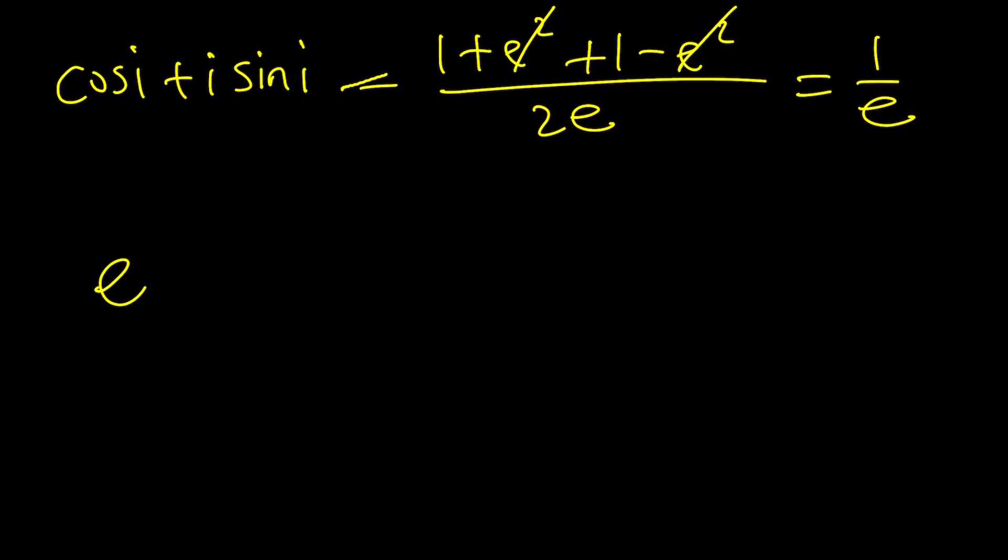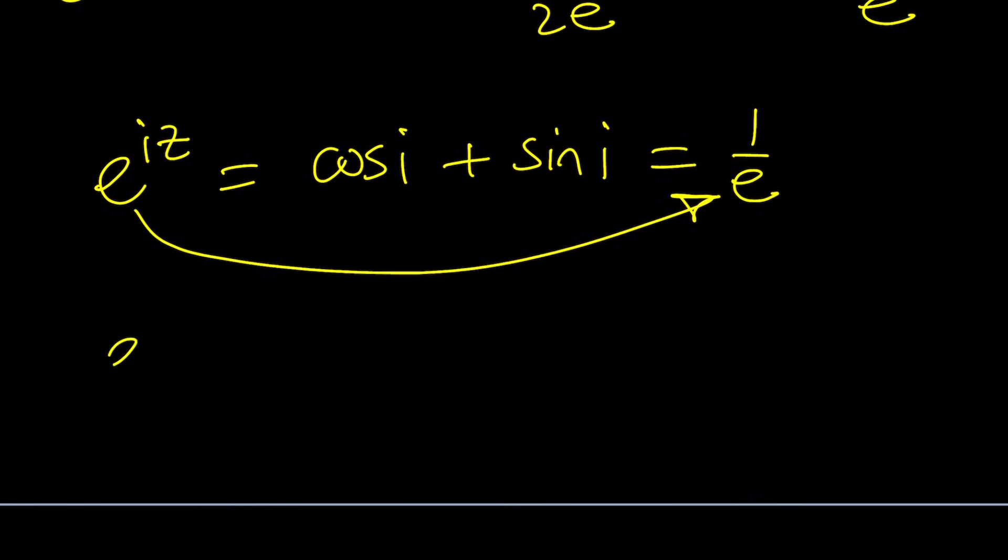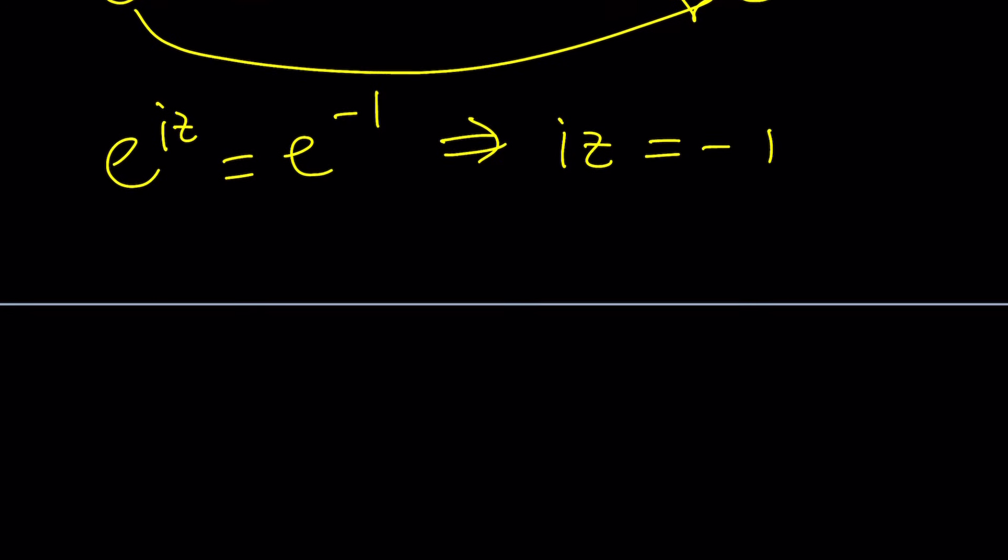It was e to the power iz. So remember the original problem was like this, and now we know that cosine i plus sine i is equal to 1 over e. Now we can associate these directly, which is cool. e to the iz equals e to the power negative 1, and then from here iz equals negative 1. And then you can just divide both sides by i, or multiply by negative i, and that's going to give you z equals i.